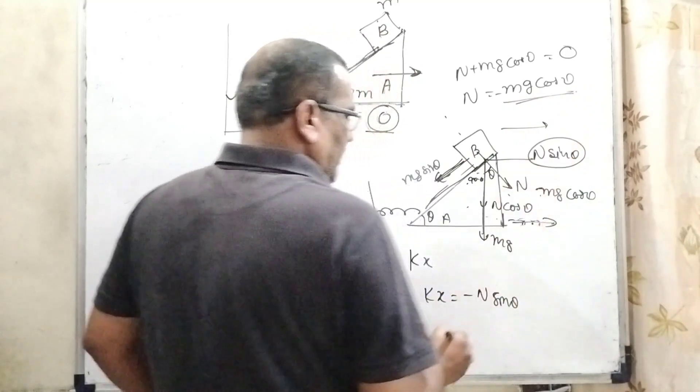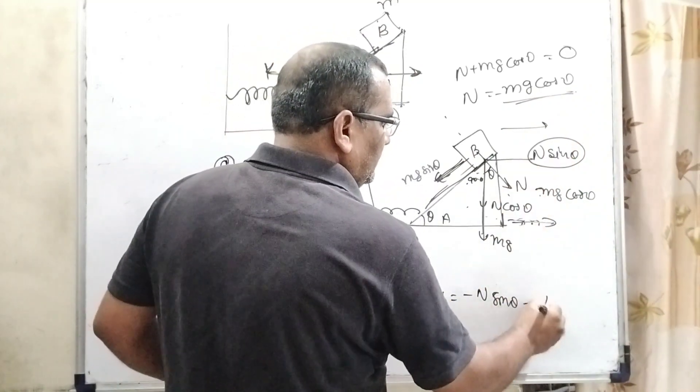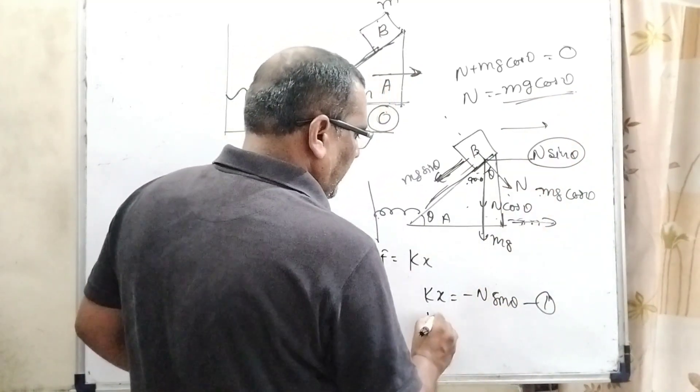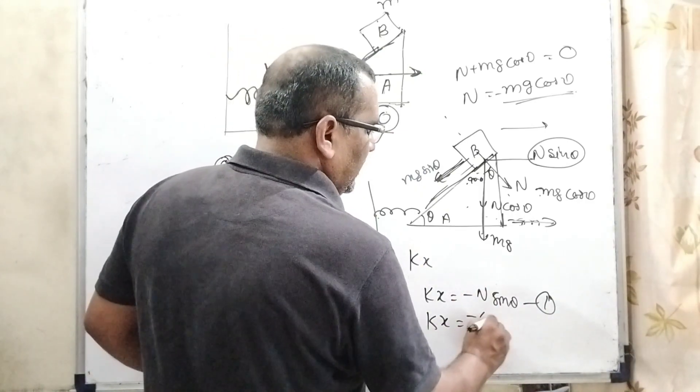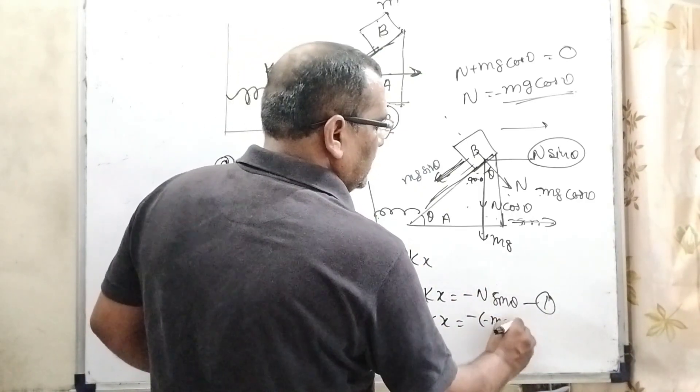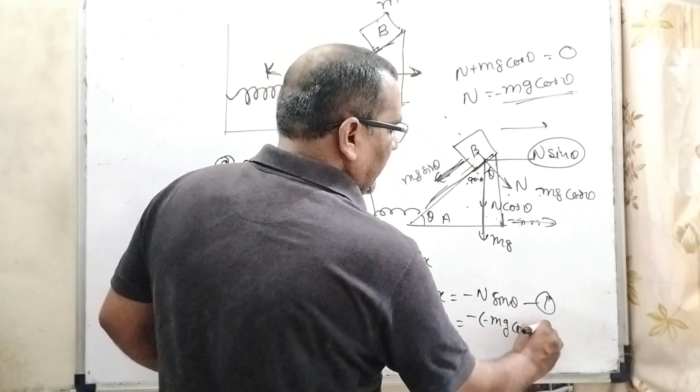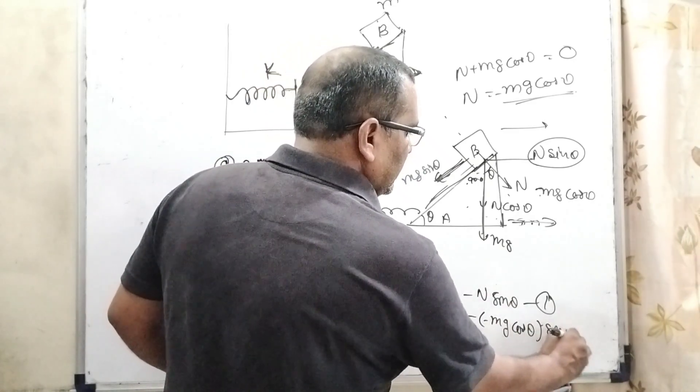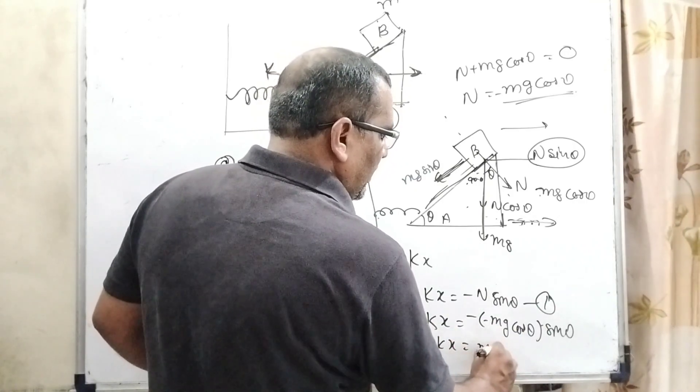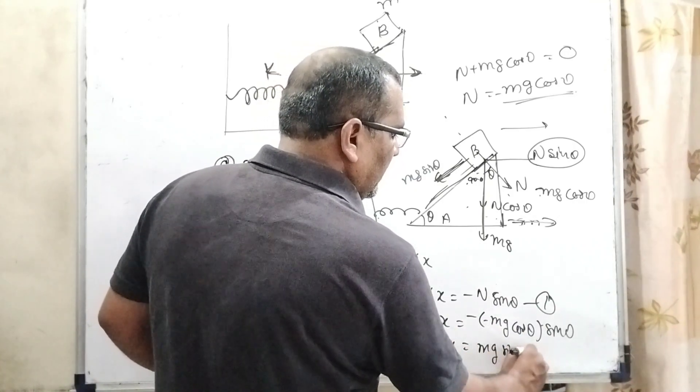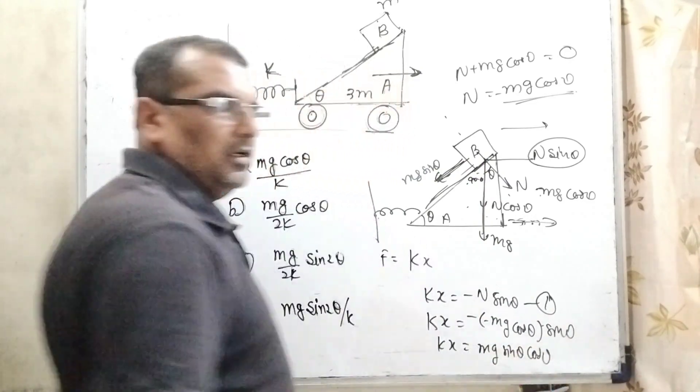Now substitute this value in our given equation. Here, Kx. And what is the value of N? Minus Mg cos theta, and here sin theta. So therefore, Kx minus minus plus, giving Mg sin theta cos theta.